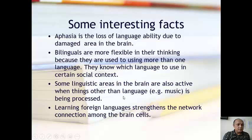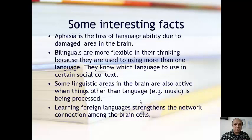Some linguistic areas in the brain are also active when things other than language — for example, music — are being processed. Every part of the brain is very active whenever it is thinking, playing or enjoying music, listening to speech, or understanding a piece of discourse. All parts are connected in order to make it happen.